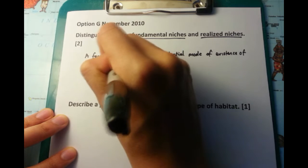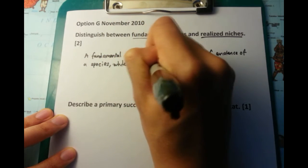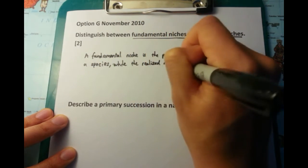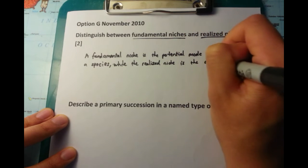The absolute maximum niche is not able to be realized, and the realized niche is the actual mode, so what actually happens.